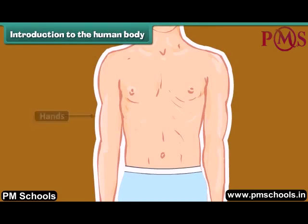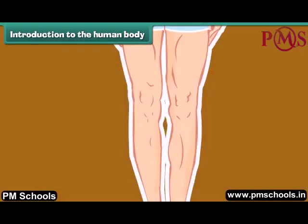Then we come to the hands that help us to hold things. Another body part is the stomach. It is a kind of a bag where all the food that we eat gets stored for digestion. And finally our legs that help us to stand straight, walk, run and play.